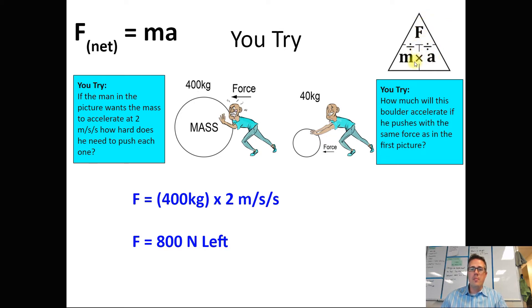So we're going to do force divided by mass in this one in order to solve for our acceleration. Well, if he uses the same force on this 40 kilogram boulder, it's going to be 800 divided by 40, and we'll get 20 meters per second per second to the left.